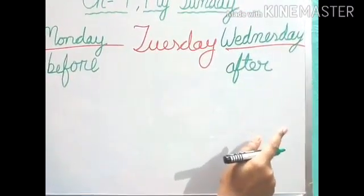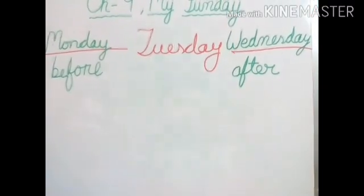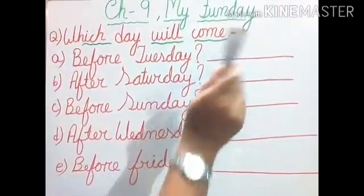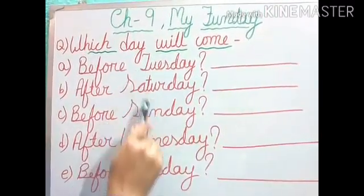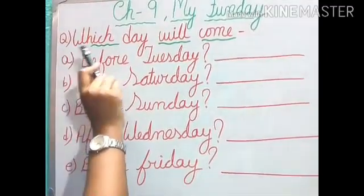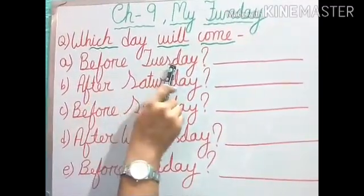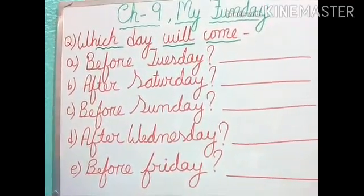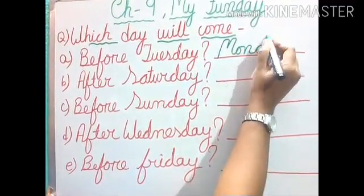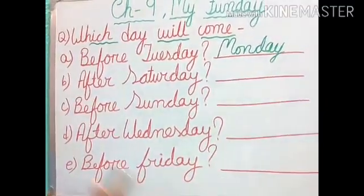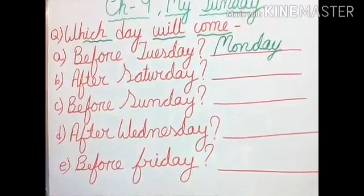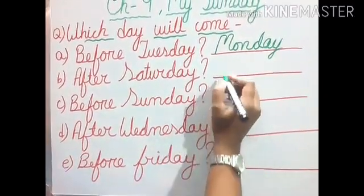So like this, I will ask you some questions and you will tell me the answers. There are some questions on before and after. Number A: which day will come before Tuesday? Just now we have done that — before Tuesday, Monday will come. Now number B: which day comes after Saturday? Think and tell. Yes — after Saturday, we will get Sunday.